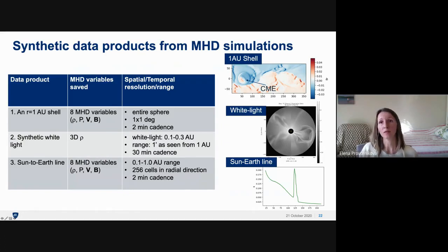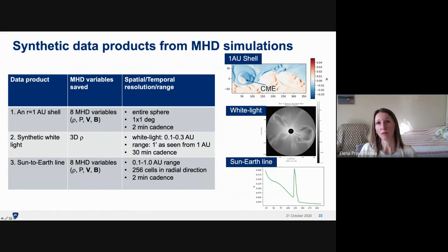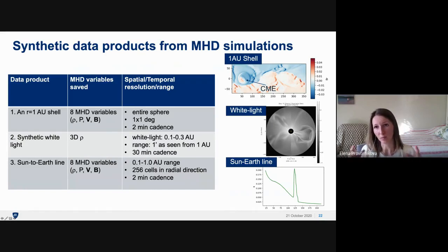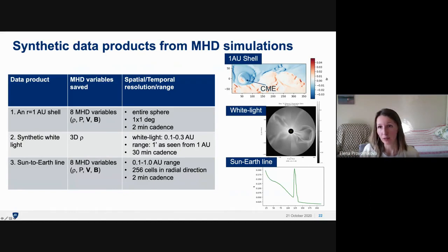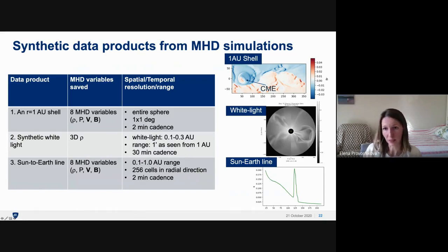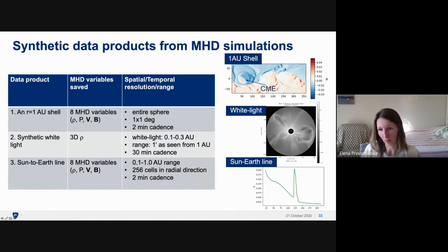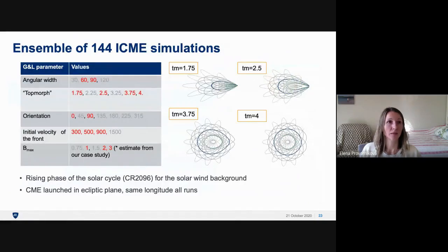The top plot shows the shell at 1 AU with a BR versus latitude-longitude map, where the circle shows where the CME is passing through the 1 AU sphere. The middle shows a synthetic white light image produced from the Gamera simulation showing the CME feature. The bottom shows the Sun-Earth line going through the propagating CME, displaying magnetic field magnitude from 21 solar radii to 1 AU.